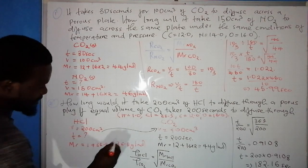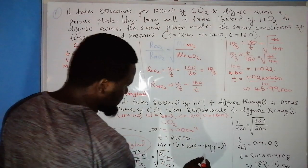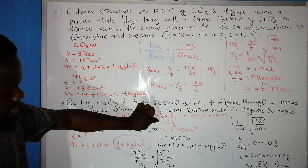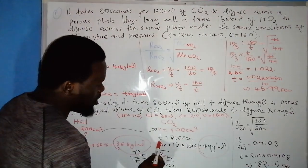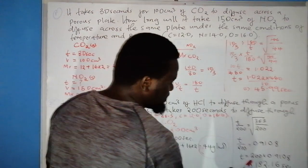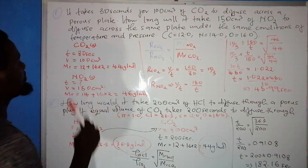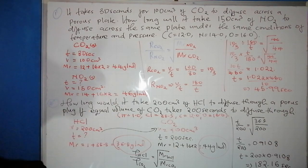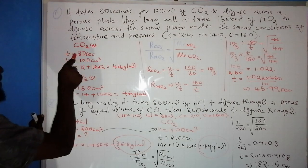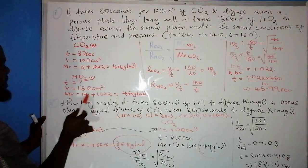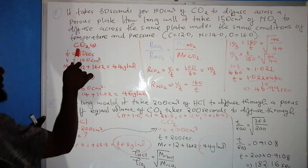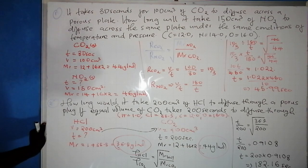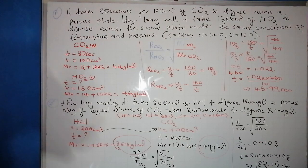Notice: the molar mass of HCl is 36.5 g/mol and CO₂ is 44 g/mol, so CO₂ is heavier. Consistently, CO₂ takes longer to diffuse (200s) than HCl (182.16s). Similarly in Example 1, CO₂ (44 g/mol) and NO₂ (46 g/mol) have close molar masses and correspondingly similar diffusion times of 30s and 45.99s. That is all for gas laws — see you in the next video on the mole concept.